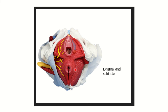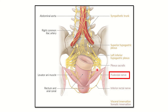Here we can see a picture showing the external anal sphincter lying around the anal canal, with nerves coming to supply it. This is the rectum; the lower part is the anal canal. We can see nerves arising from different parts and coming to supply the anal sphincter — this is the inferior rectal nerve, which is a branch of the pudendal nerve. The inferior rectal nerve supplies the external anal sphincter.